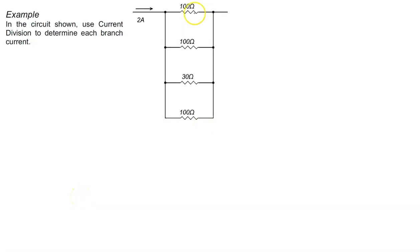Okay, so here you note we've got four resistors in parallel, and we're asked to use current division to determine the current in each branch.